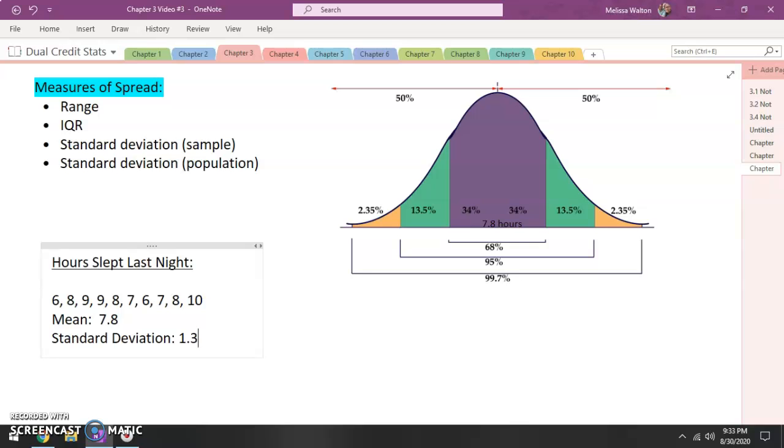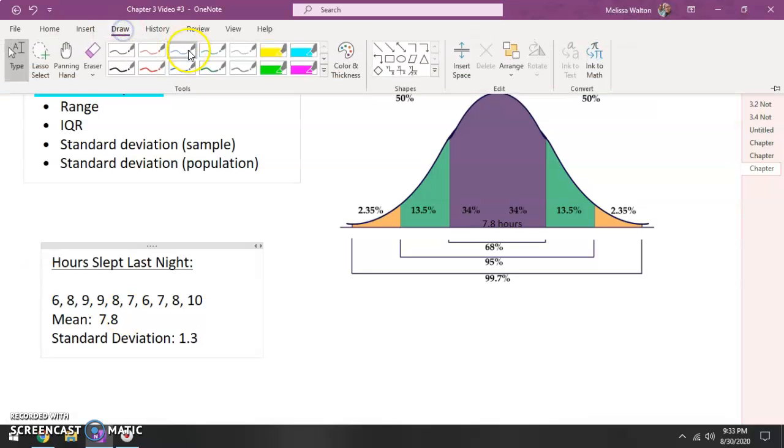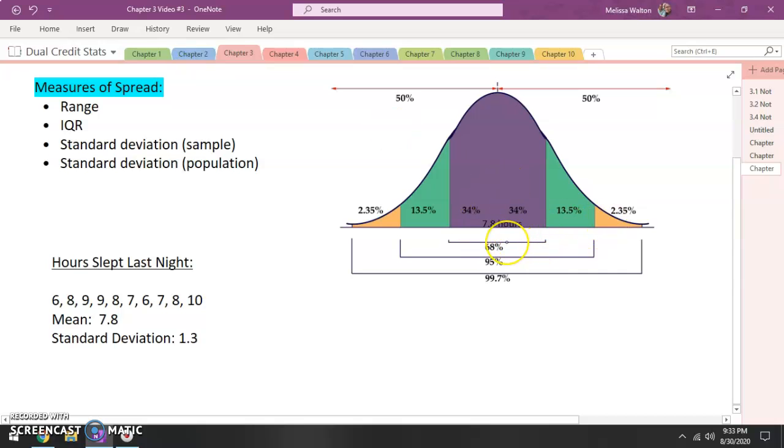Well what I'm going to do is I'm going to go ahead and add these together. So let's go in the positive direction first. Let's go ahead and go with our positive standard deviation. Well one standard deviation above is going to be 9.1 hours. Adding again plus 1.3, this is going to be 10.4 hours. And then finally three standard deviations above is going to be 11.7 hours.